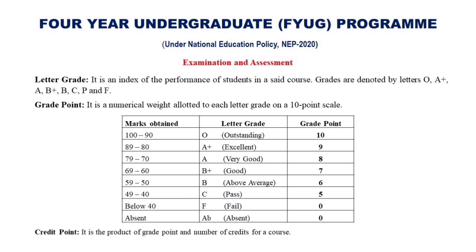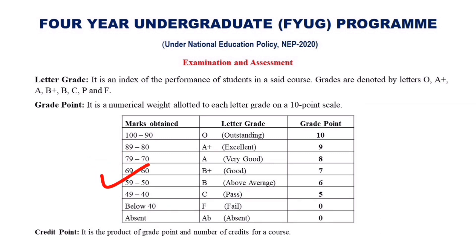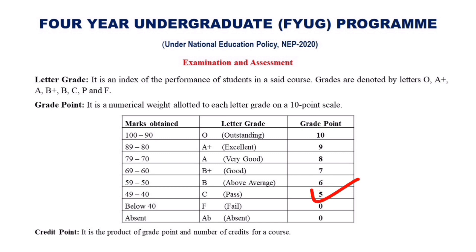Likewise, for marks in the range 80 to 89, it is an A+ letter grade, for which the student will get a grade point of 9. Similarly, for marks in the ranges 70–79, 60–69, 50–59, and 40–49, the letter grades will be A, B+, B, and C respectively, for which the student will get grade points of 8, 7, 6, and 5 respectively. Below 40 marks it is an F grade, for which the student will get zero grade points — that means fail.